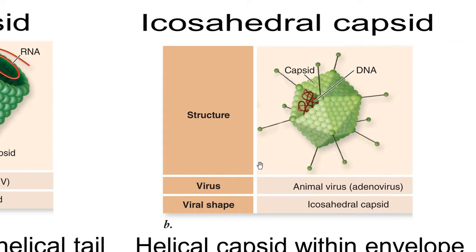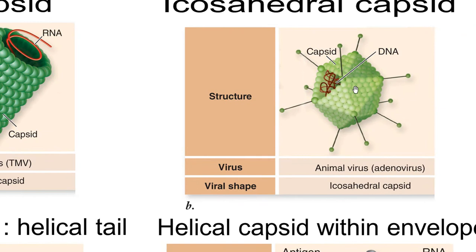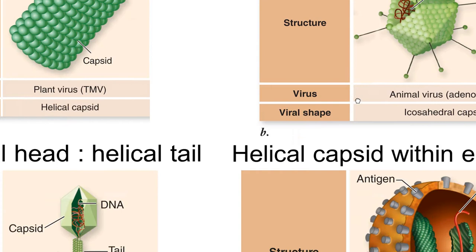Next we have the icosahedral capsid. The difference from helical is that this is a round structure with 20 sides, all joined together. Each side is made of small proteins and subunits called capsomeres arranged around the core. One common example of this type of virus shape is adenovirus.